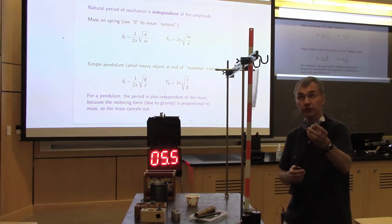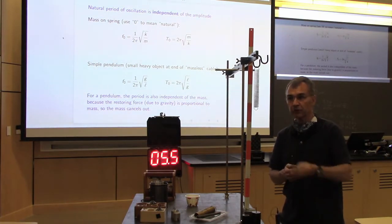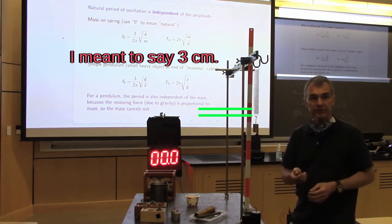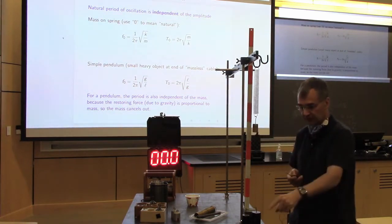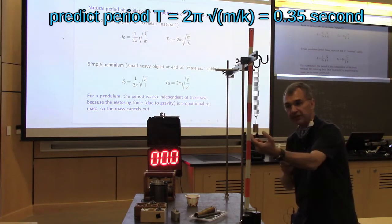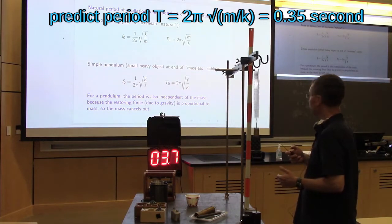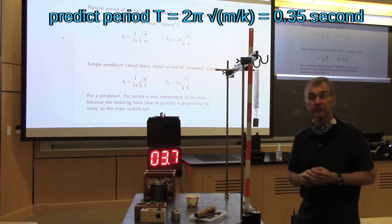With a 200-gram weight — 0.2 kilograms — the spring should go down only about 1.3 to 1.4 centimeters, so it won't go down much at all. That seems about right. Now it should oscillate even faster because the square root of the mass — which gives us the period — is even smaller. It's 20% of what it was the first time, so the period is about 40% of the original. [counts 0 through 10] The number I worked out was 0.35 seconds for the period, so 10 times should be 3.5 seconds. We measured 3.7 seconds — pretty decent.